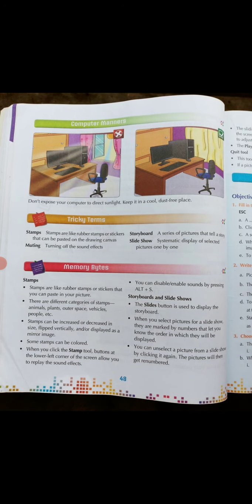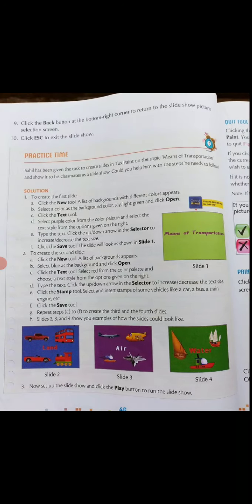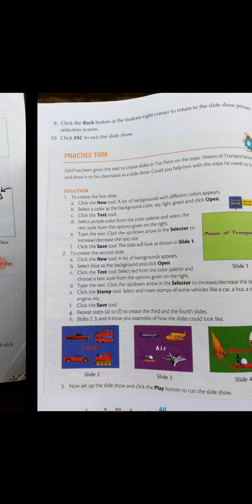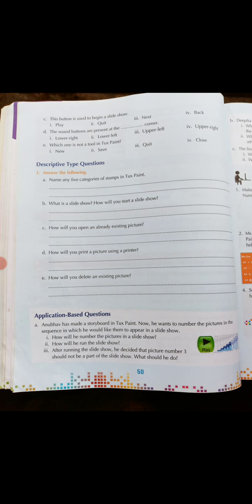Students, your chapter is totally completed. Chapter number 4 is completed. I have explained two topics today: quitting a tool and printing a tool. These were the last topics of this chapter. I have also given you one answer for the question: How will you print a picture using a printer? You are going to learn this particular answer as your homework. Thank you all and have a nice day ahead.